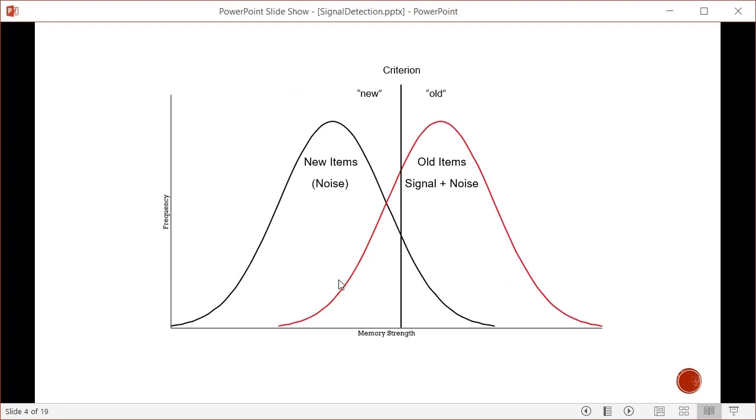With repeated sampling, we end up with sampling distributions. For this discussion, we assume they're normally distributed with the same variability. On the left, you have new items forming a distribution - this is our noise. To the right, you have the old item distribution, which is signal plus noise. Signal detection theory is used when these distributions overlap, causing errors or ambiguity. If distributions were far apart with a clear signal, you wouldn't have errors and wouldn't need a criterion. Here we're talking about situations where distributions overlap.